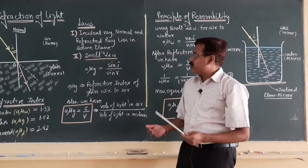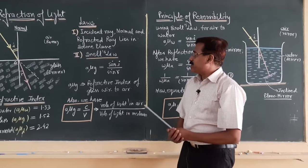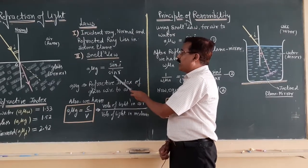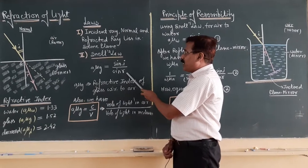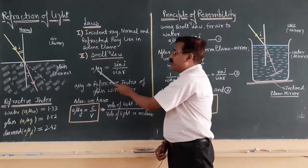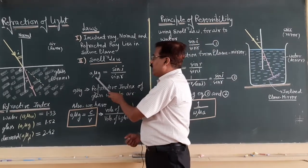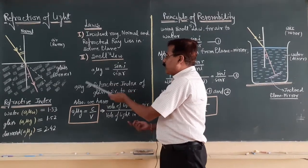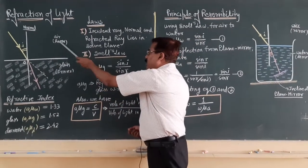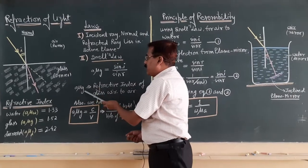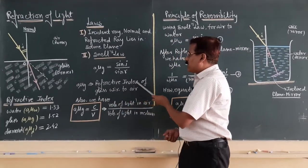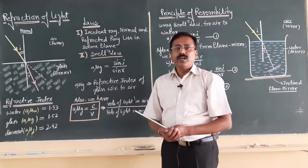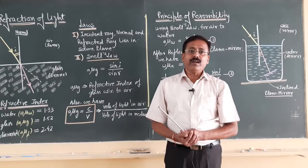The second law, also known as Snell's law, states that the ratio of the sine of the angle of incidence to the sine of the angle of refraction is always constant, and this constant is given by mu. This mu is the refractive index — here it is written as a-mu-g because light travels from air to glass, meaning the refractive index of glass with respect to air. This refractive index tells us about the bending pattern of light energy.